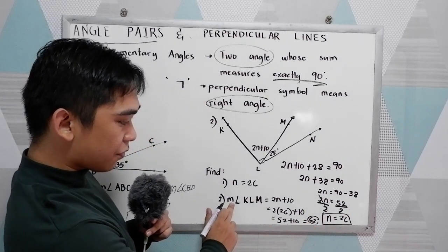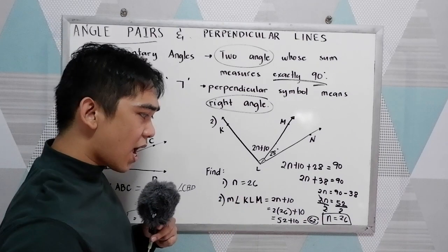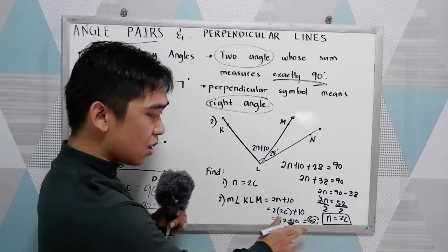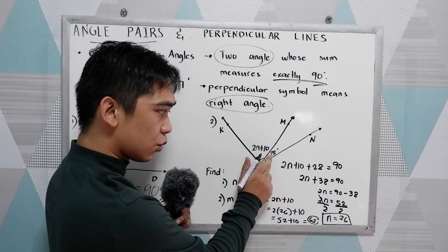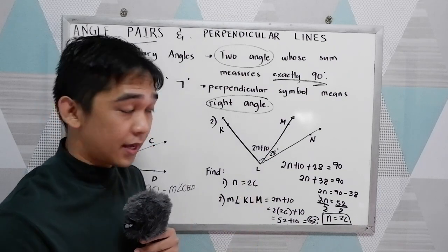62 degrees is the measure of angle KLM. If you want to check if your answer is correct, just substitute. 62 plus 28, is it equal to 90?